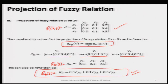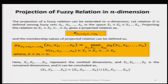We have now obtained the projection of fuzzy relation R on A and on B. In both cases, the original fuzzy relation set R was multi-dimensional, defined on both X and Y. After projection onto either A or B, the dimension was reduced by 1.